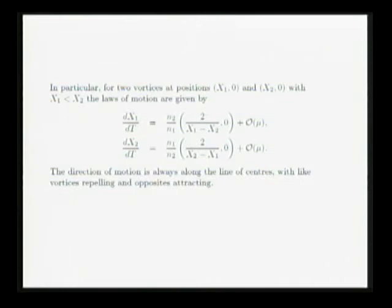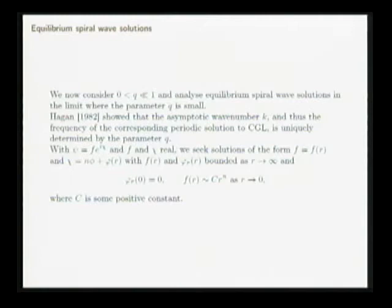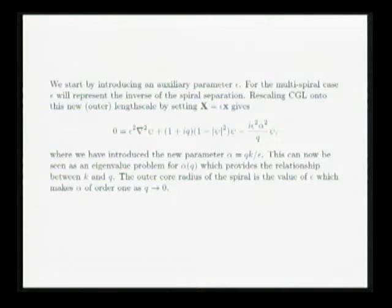What changes when q is non-zero? It actually gets a lot more complicated even if q is small. I just want to show you what happens for a steady spiral solution for small q, and then show you what happens with the law of motion. I'm going to consider the limit in which q is non-zero but small, and the first goal is to determine the asymptotic wave number even for a steady vortex. As before, I'll look for solutions f e to the i chi, where chi is n phi locally, but now there's a radial dependence on chi because in this case I get a spiral.